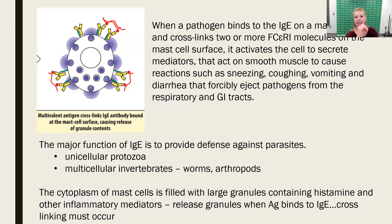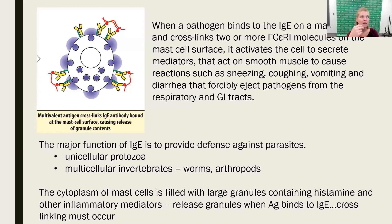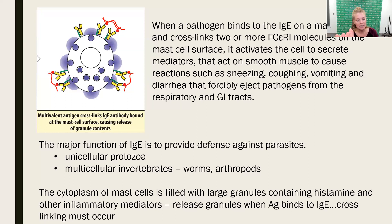Depending on what tissue the cells are in, degranulation will cause pretty violent reactions — sneezing, coughing, diarrhea if it's in the gut — and the whole purpose of those processes is to rid the body of whatever is causing the infection. The major function of IgE is to protect the body against parasitic infections, which can be unicellular protozoa, multicellular worms, or even arthropods.